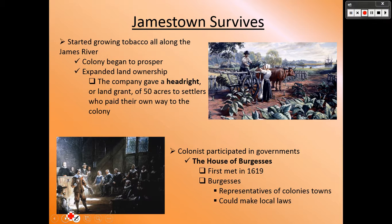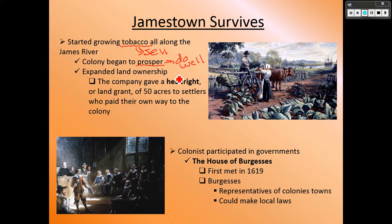Jamestown eventually did better than others mostly because they were able to grow tobacco and sell it, which allowed them to prosper — prosper just means they're doing well, making money, and trading with native Americans for food. Eventually they started doing so well they wanted to expand, and you get the headright system, which is basically a land grant where they're given land to work and then give a portion of their profit to the people in charge.